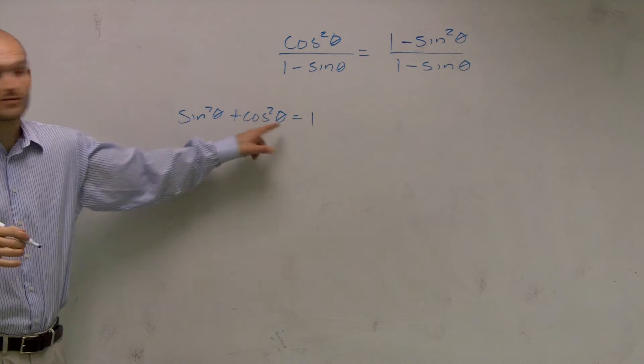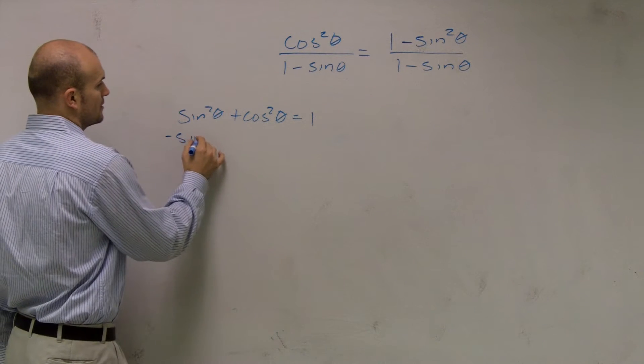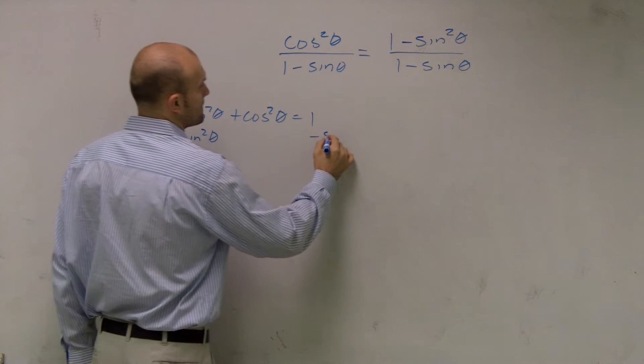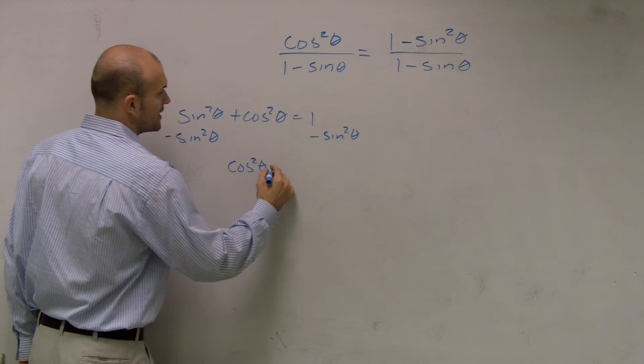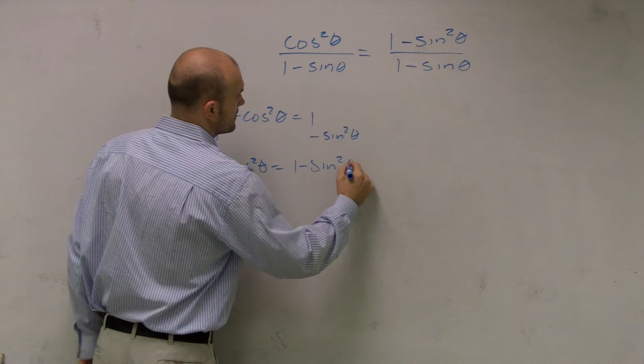Yeah, I see that. So what does cosine squared equal? You subtract sine squared theta. Therefore, I have cos²θ = 1 - sin²θ.